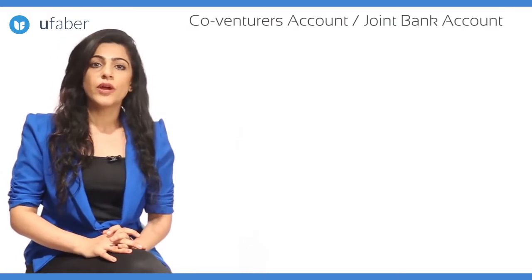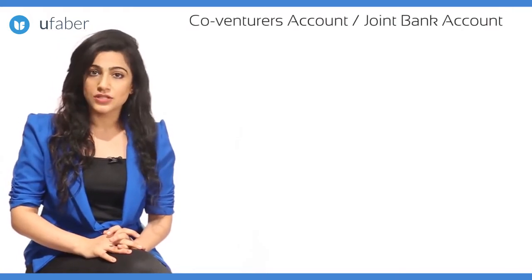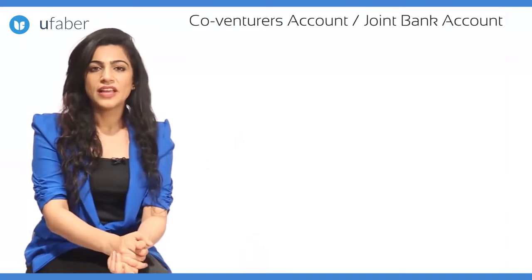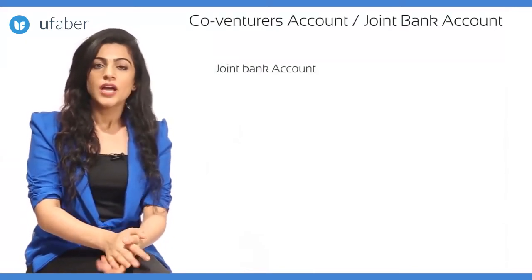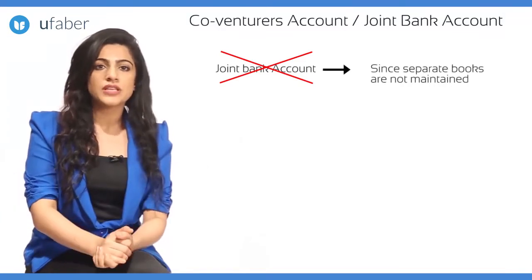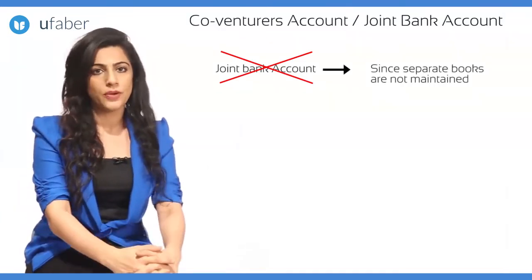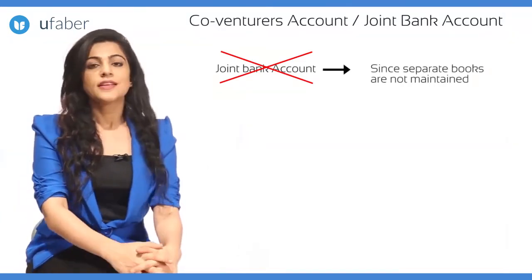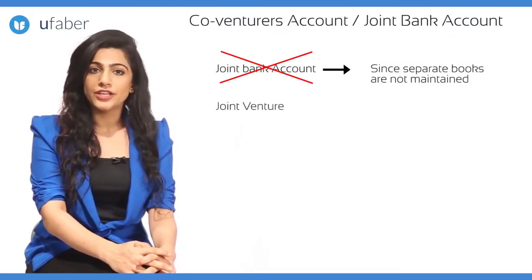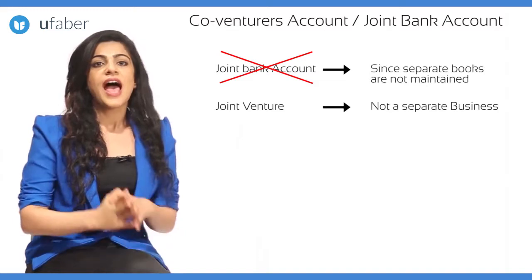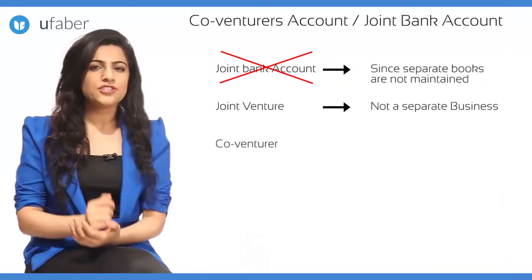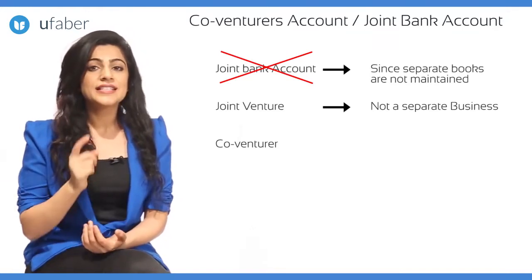Can we prepare a co-venturers account? Can we prepare a joint bank account? In the case of a joint bank account, we do not open another bank account when no separate books are being maintained by the joint venture. This is because the co-venturers do not consider the joint venture as a separate business, as explained earlier.